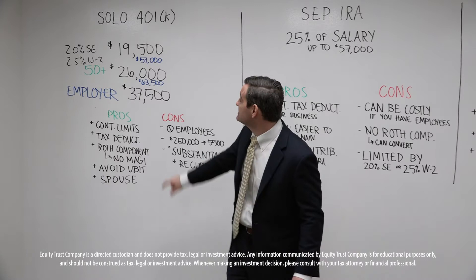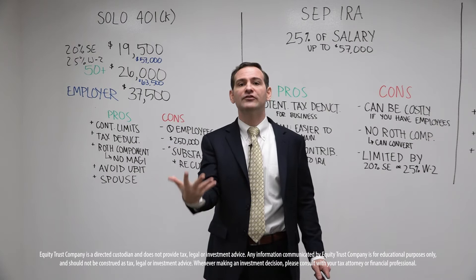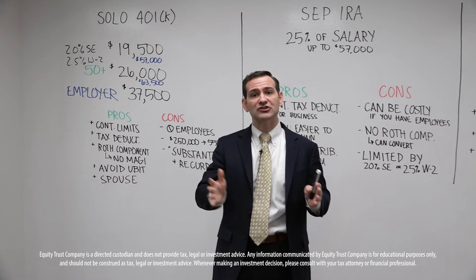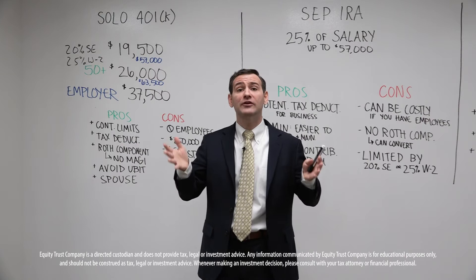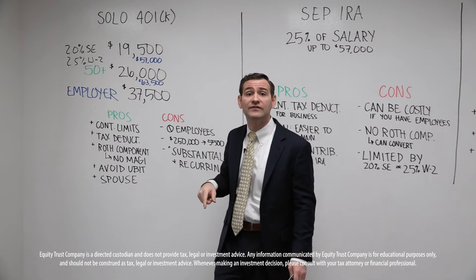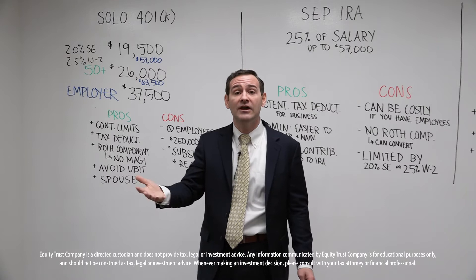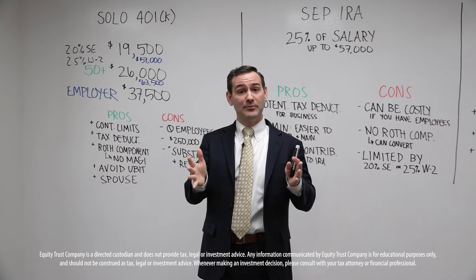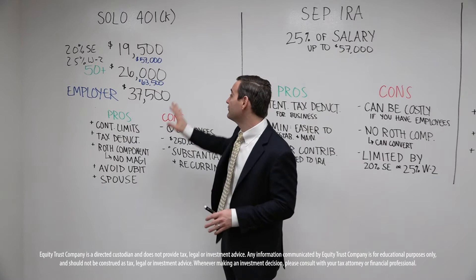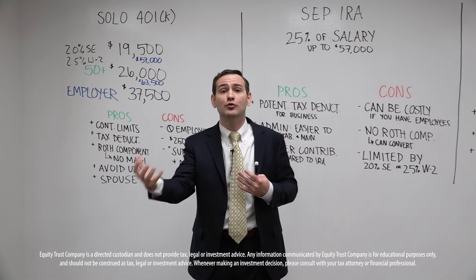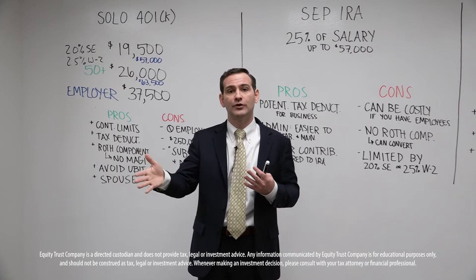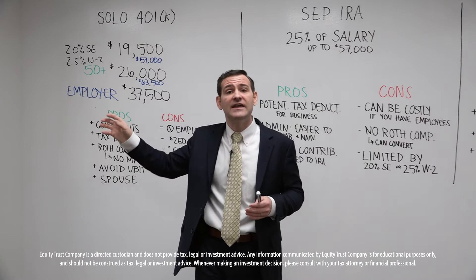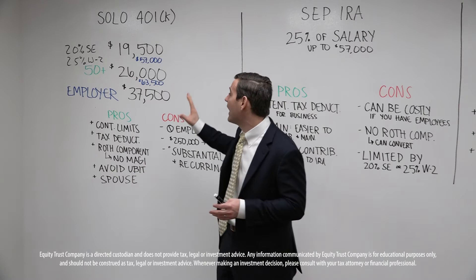That leads us to the next pro: the Roth component. This $19,500 or $26,000 can be contributed into the Roth component of the solo 401k. Here at Equity Trust, built within our plan document, you have the Roth component. Those after-tax dollars are going to create more after-tax dollars, and you leverage compounding interest in the absence of taxation. A lot of our real estate investors are attracted to that Roth component because when they start taking distributions after age 59½, they have 0% tax on those distributions.